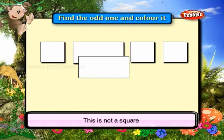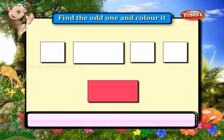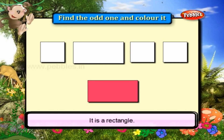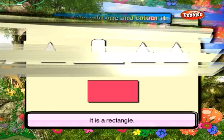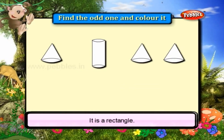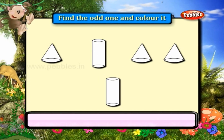This is not a square. What is it then? It is a rectangle. This is not a cone — it is a cylinder.